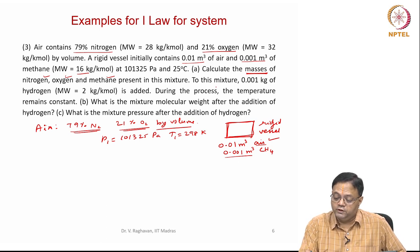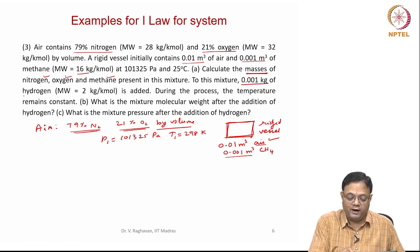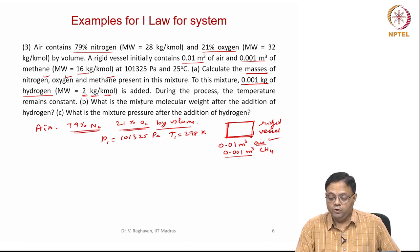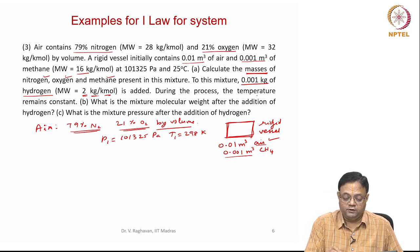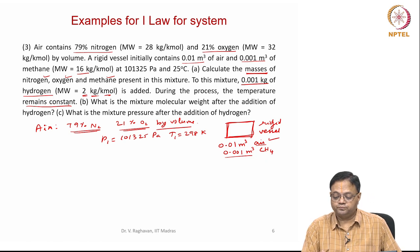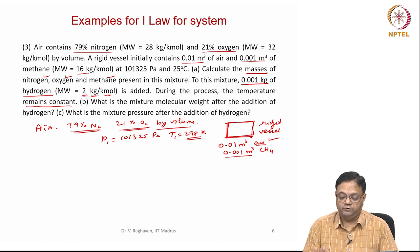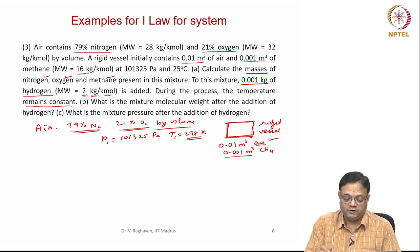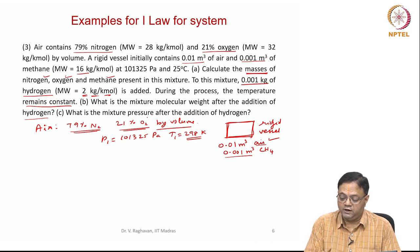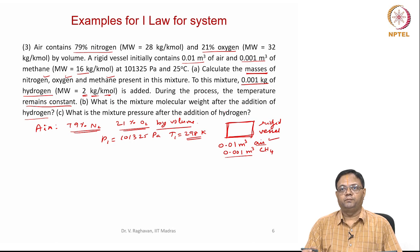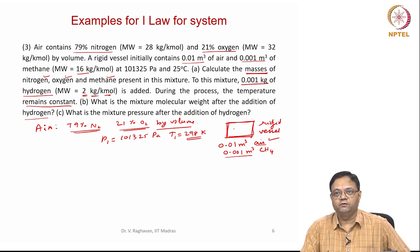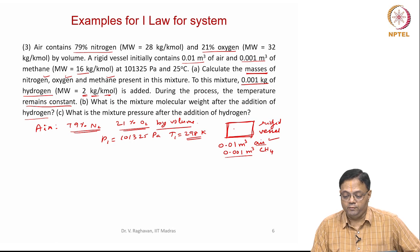This is the first part. Second: to this mixture, 0.001 kg of hydrogen — molecular weight is 2 kg per kilo mole — is added. During this process, temperature remains constant at 298 Kelvin. What is the molecular weight of the mixture after the addition of hydrogen? What is the mixture pressure after the addition of hydrogen? When you add hydrogen to the rigid vessel, the pressure will increase.